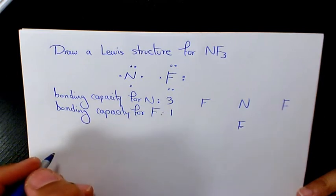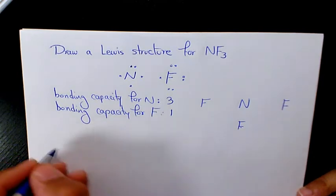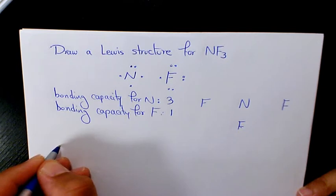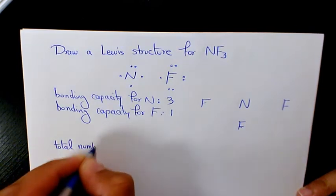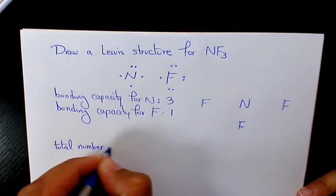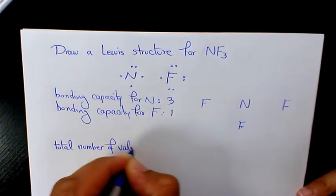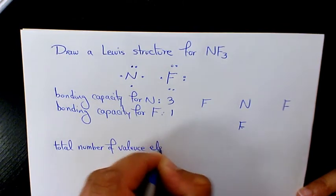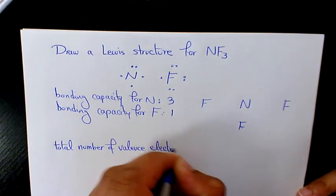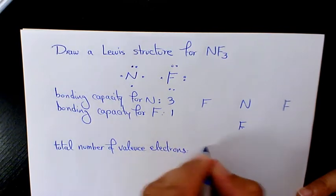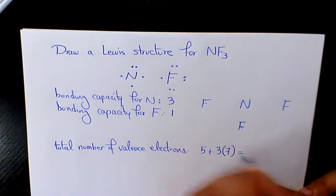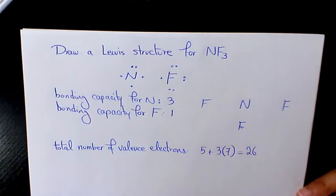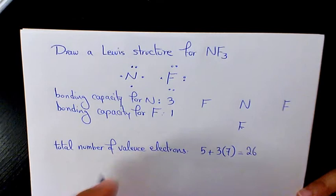Then what we need to do is add the number of valence electrons available in an atom of each of the elements. So the total number of valence electrons is going to be five plus three times seven, which gives us 26.